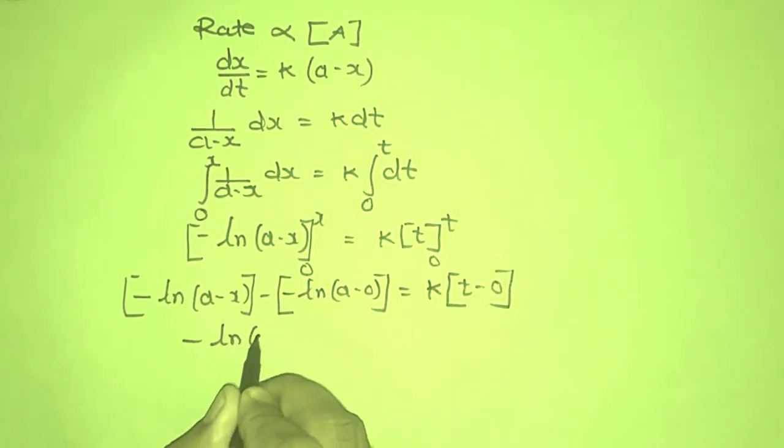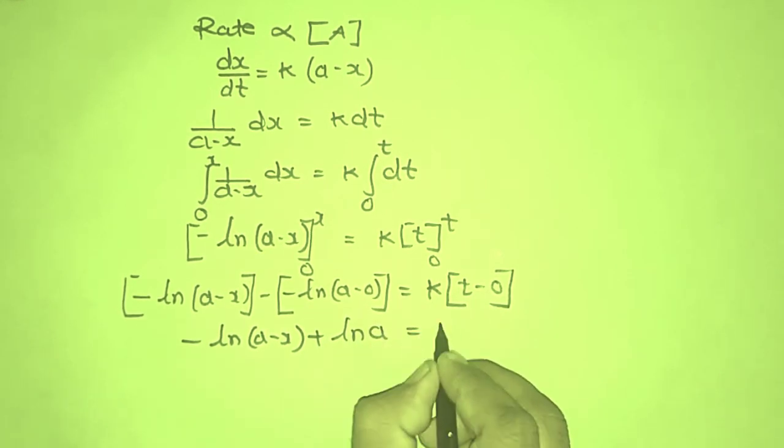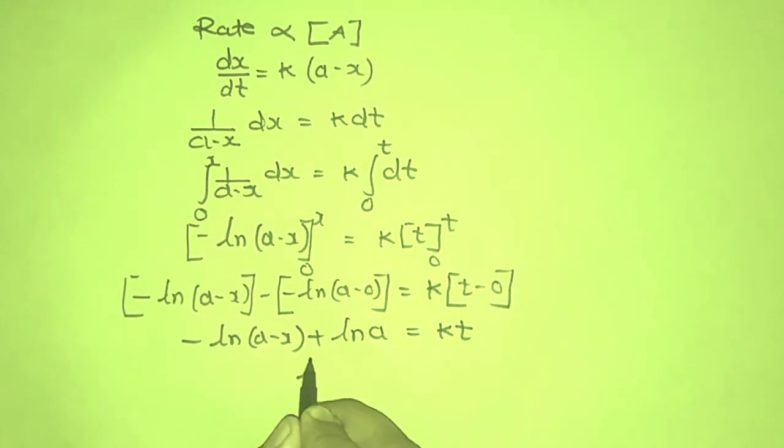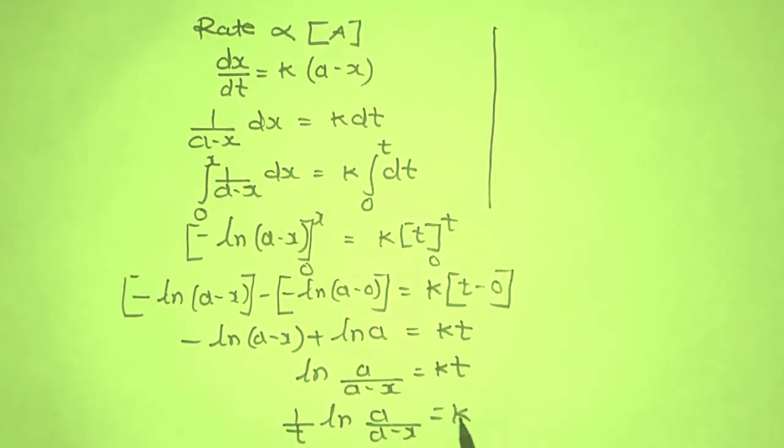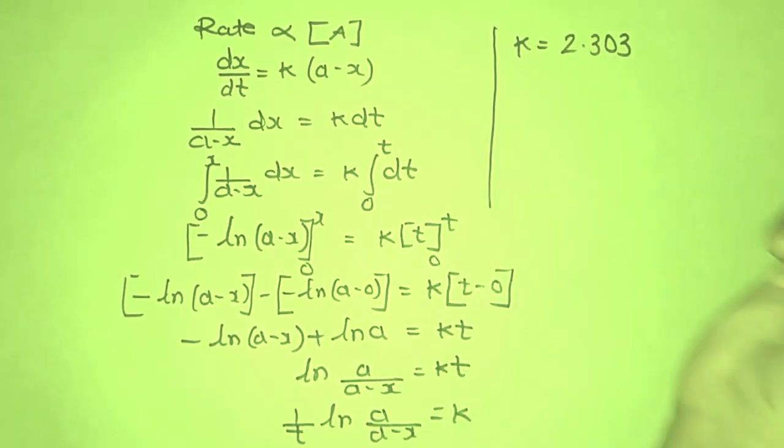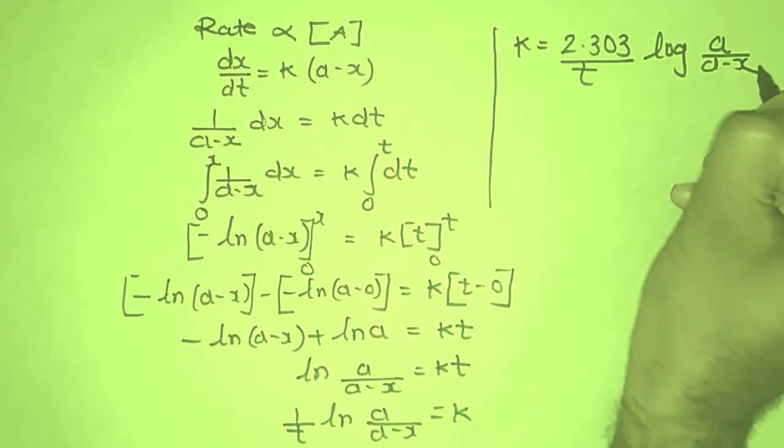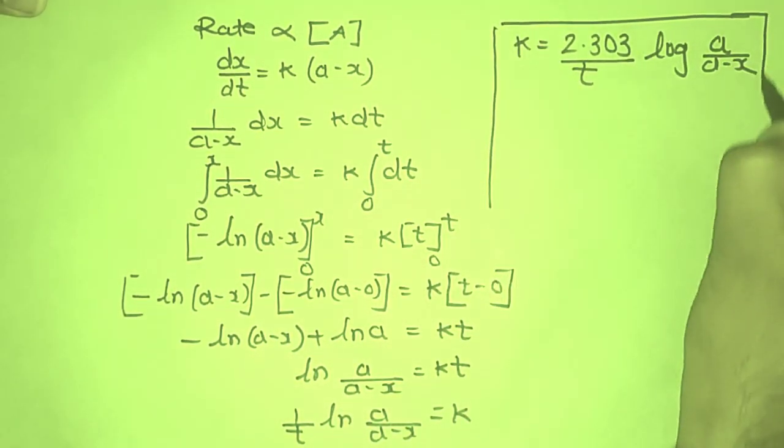So finally it becomes -ln(A-x) + ln(A) = Kt. I will bring this t on this side, so it becomes 1/t, and then finally ln(A/(A-x)) = K. Then I will convert this ln to log to the base 10. So K = 2.303/t log(A/(A-x)). So this we call it as integrated rate equation for first order reaction.